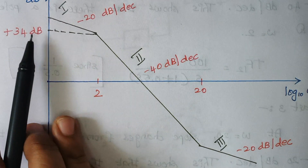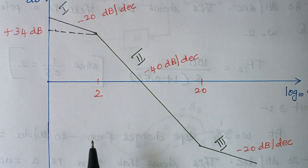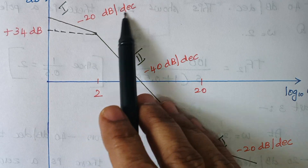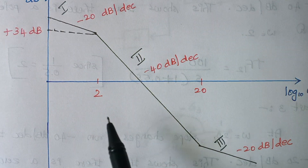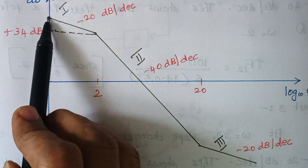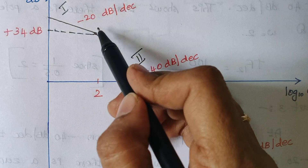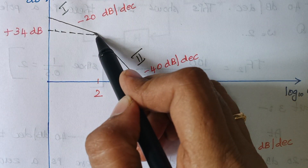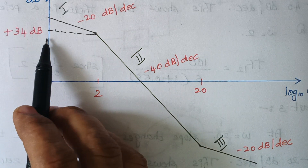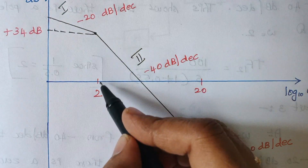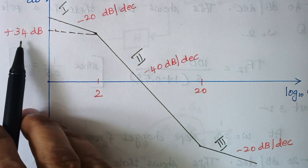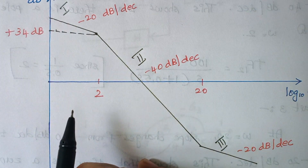Before we start, when you look at part 1, what are the things you observe? Here we are having a slope of minus 20 decibels per decade. You have to look at both ends. At this end, the value of magnitude is 34 dB. And what is the value of frequency? At a frequency of 2, you are having a magnitude of 34 dB and a slope of minus 20.